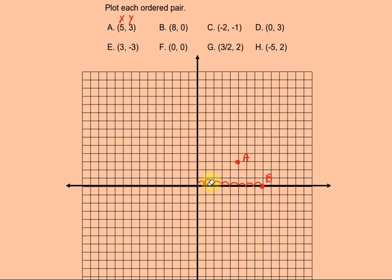Point C has negative numbers. My x-value is negative 2, so I start at 0 and travel to the left 1, 2 spaces. Then my y-value is negative 1, so I go down 1 space. That's where my point C is.